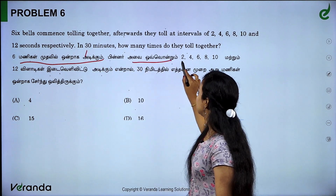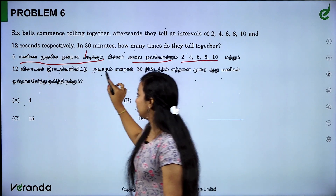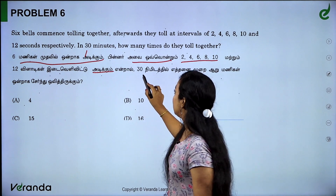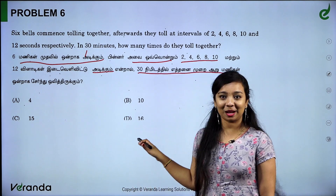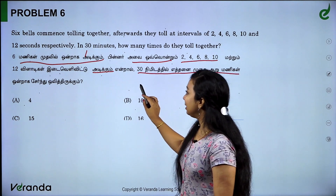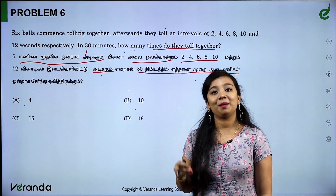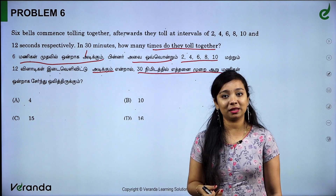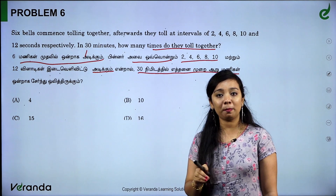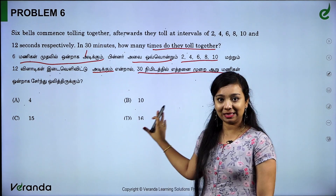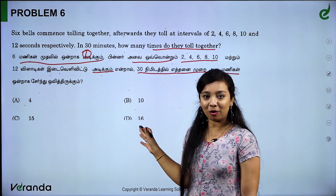Now a real-life application: if bells ring at regular intervals, how many times do they ring together? There is a meeting point. To find when they meet at the meeting point, we calculate the LCM. If you have a common multiple, you get the LCM. This is the clue for bell or meeting-point problems. The answer comes from LCM — that's the key concept.